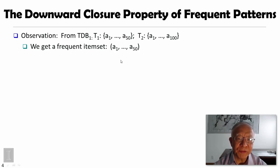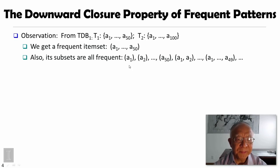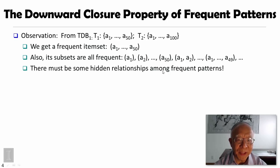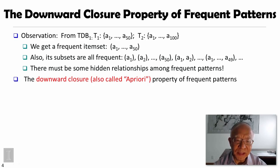Suppose we get a frequent itemset A1 to A50. Then we can clearly see all its subsets — like A1, A2, or A1 and A2 as an itemset — they are all frequent. There must be some interesting hidden relationships among different frequent itemsets. This is called the downward closure property of frequent patterns, which is also called the Apriori property.